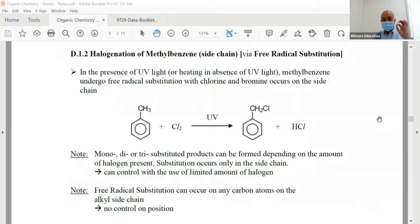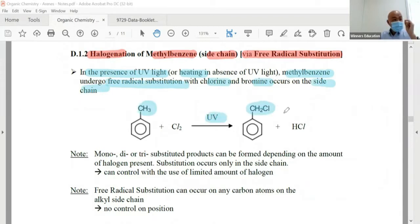Next we go to talk about the other reaction, which is the free radical substitution of methylbenzene, which is the side chain halogenation. In the presence of UV light or heating, methylbenzene undergoes free radical substitution with chlorine or bromine for the side chain.